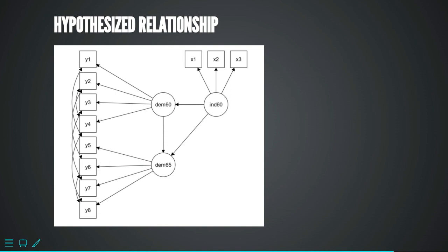This is the diagram of the hypothesized relationships between the observed and latent variables, and also the latent variables predicting other latent variables. You can see y1 to y4 for Political Democracy in 1960, y5 to y8 for Political Democracy in 1965, and x1 to x3 for Industrialization in 1960. Level of Industrialization in 1960 predicts Level of Democracy in 1960, and both of those predict Level of Democracy in 1965.